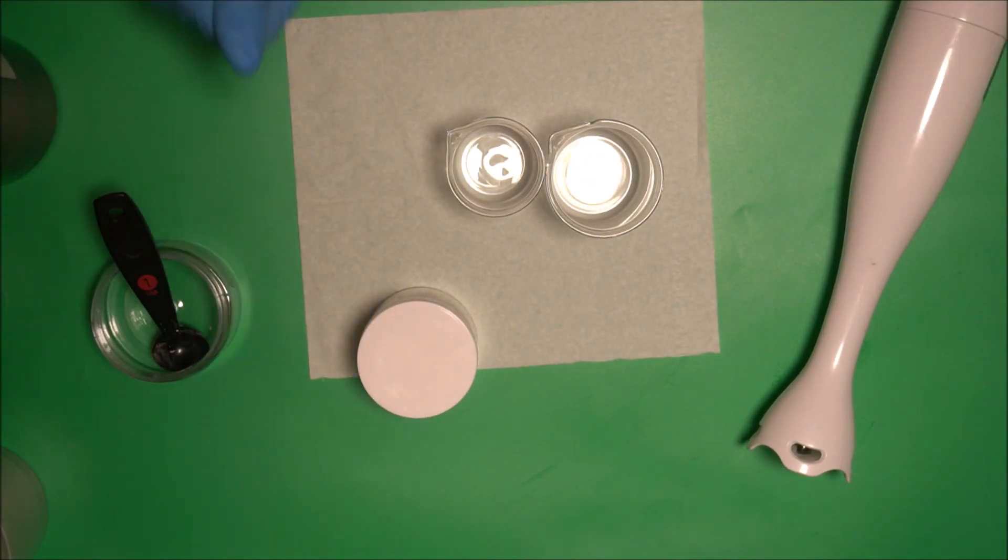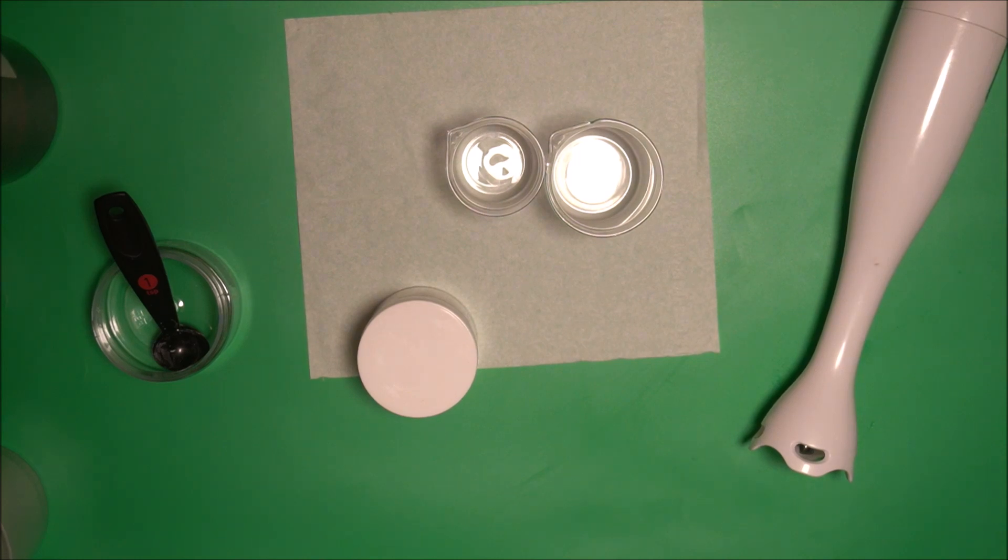Why do we use xanthan gum? It helps to stabilize your emulsion and really helps to give you a strong, high viscosity emulsion. A lot of you that don't use xanthan gum, I highly recommend that you keep using it from now on. It's a life-saving ingredient.